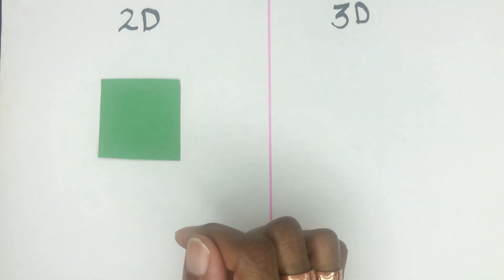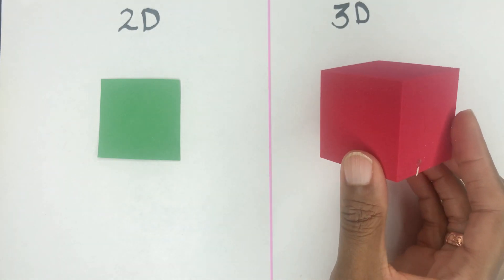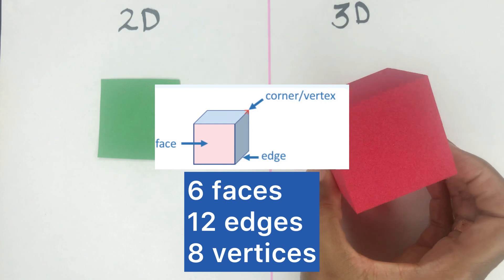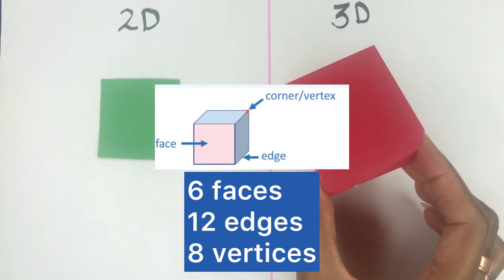Here we have the good old square. When it's three-dimensional, it's called a cube. What are the properties of a cube? It has six faces, 12 edges, and eight vertices.